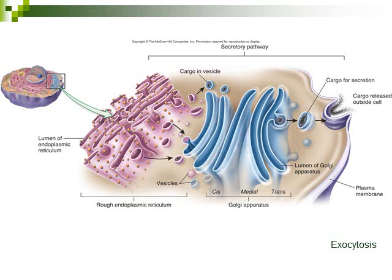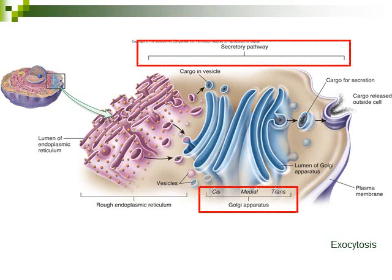This slide shows the relationship between the rough endoplasmic reticulum and the Golgi apparatus. The rough ER — the purple structure on the left with the little orange ribosomes attached — is responsible for synthesizing proteins. These proteins are then put into vesicles that travel to the Golgi apparatus, the blue structure in the middle. While the protein moves through the Golgi apparatus, it can be processed, and then it comes out the other side. That cargo can then be released outside of the cell.